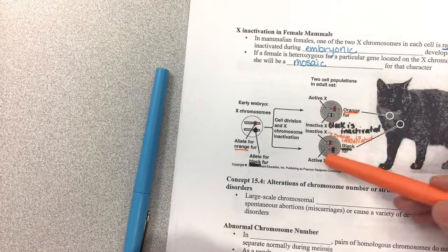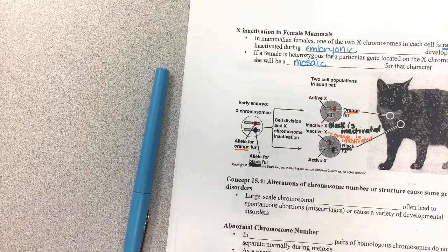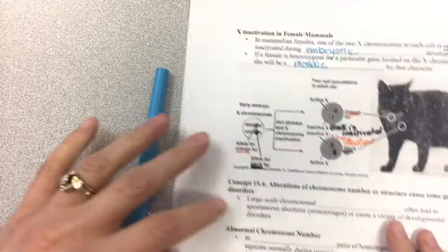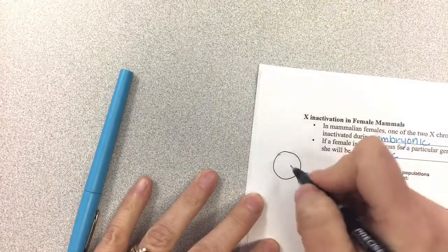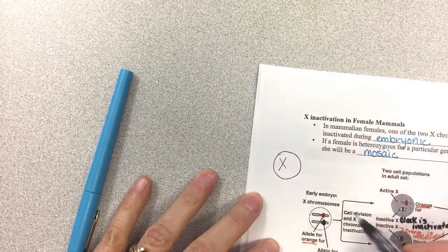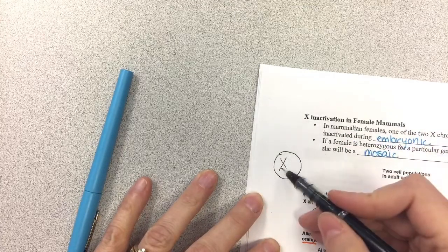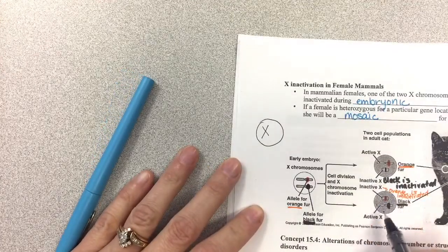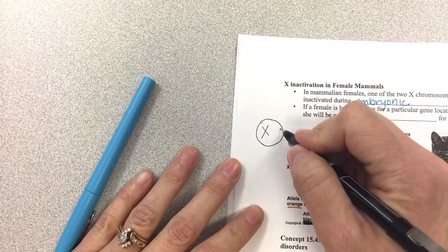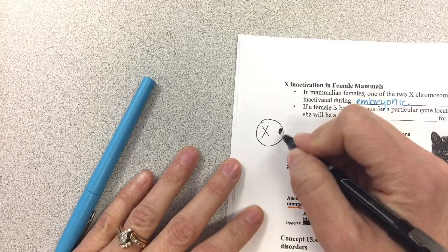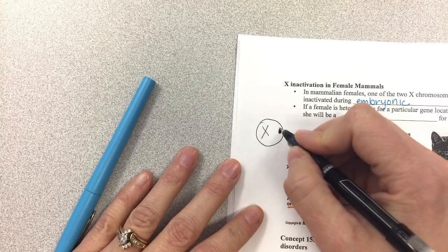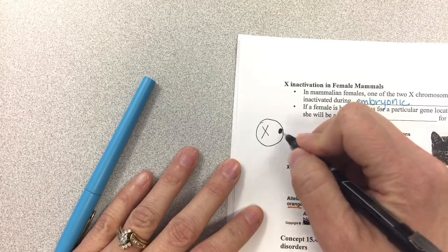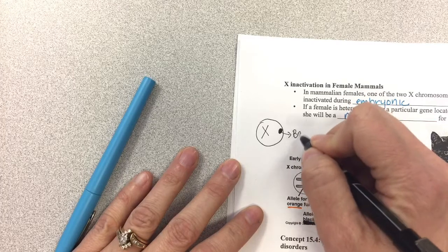And what happens is, it's not showing you here, but an inactive X chromosome looks like this. So here's the cell, here's the X chromosome that is active. When whichever one is becoming inactivated, it usually forms just like a little blob. It kind of looks towards the cell membrane of the cell, and they call this a bar body.